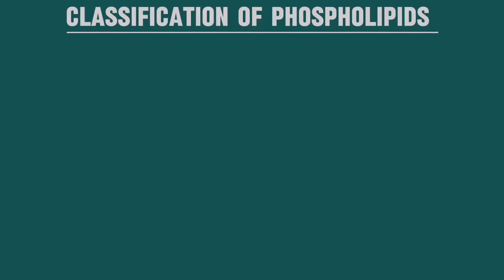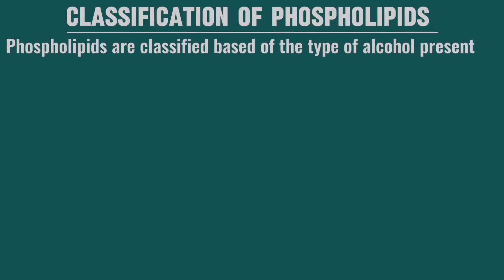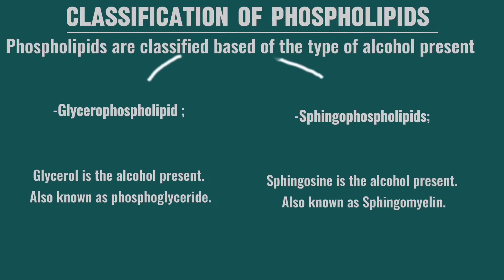Classification of phospholipids: phospholipids are classified based on the type of alcohol that is present. If the alcohol present is glycerol, it is known as glycerophospholipid or phosphoglyceride. If the alcohol present is sphingosine, it is known as sphingophospholipid or sphingomyelin.